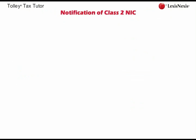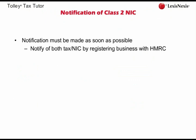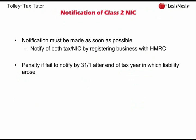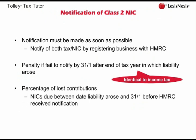A self-employed individual must also notify HMRC that they are liable for Class 2 national insurance contributions. Notification must be made as soon as possible. In practice, a self-employed individual will notify HMRC for both tax and Class 2 NICs by registering his business with them. If notification for Class 2 NIC does not take place by the 31st of January following the end of the tax year in which the liability first arose, a penalty will be charged — identical to the late notification penalty for income tax, with the relevant percentage applied to lost contributions.